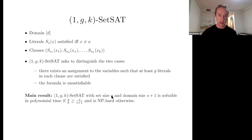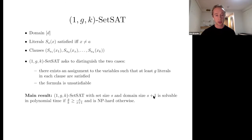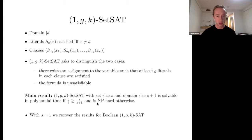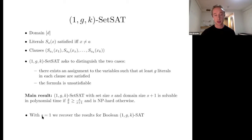Our main result is similar to the Boolean result: if the guarantee on satisfied literals is high enough, the problem is tractable; otherwise it is hard. The domain size is S plus one, showing our literals are indicator functions forbidding only a single domain value. If we take S equals one, we recover the Boolean case — this fraction becomes one half — and a literal that forbids only one value forbids either true or false over domain size two.